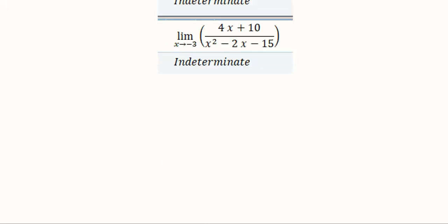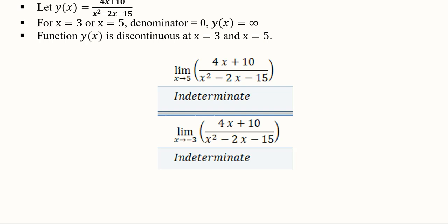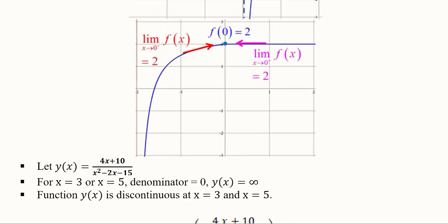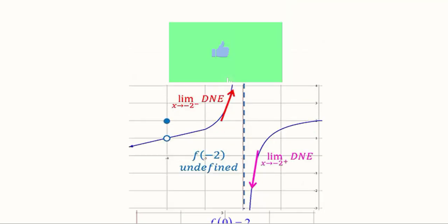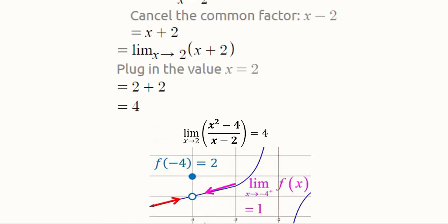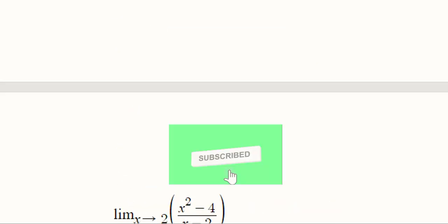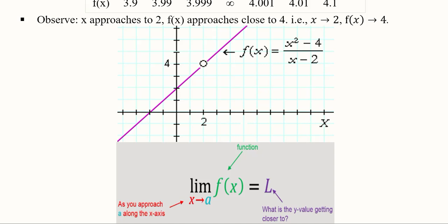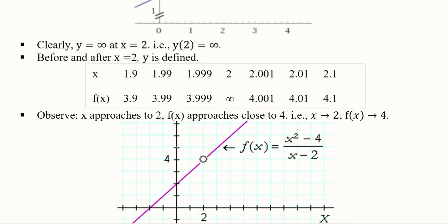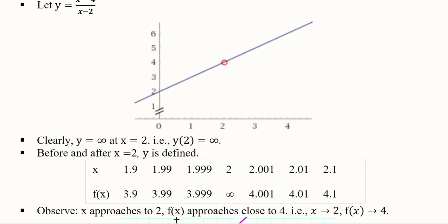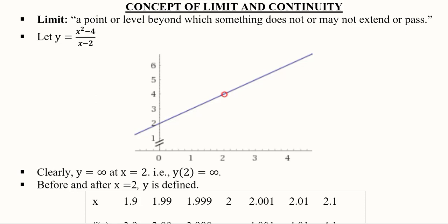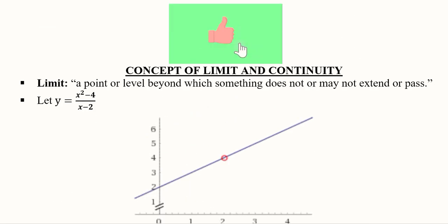This is how the continuity of a function can be found. If a function is continuous, we can find its derivative. If it is not continuous, it is known as discontinuous and we cannot find its derivative. To summarize, we covered the concept of limits and continuity — starting with a graphical depiction, then a table, then a numerical example, and finally graphical examples — all to help us understand which functions are differentiable.